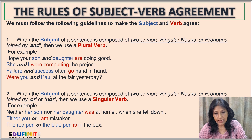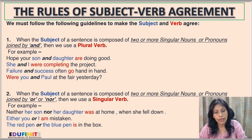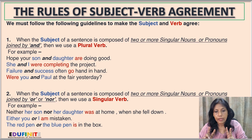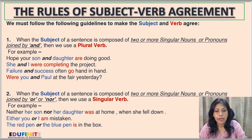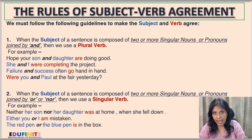Rule number two: when the subject of a sentence is composed of two or more singular nouns or pronouns joined by 'or' or 'nor', we use a singular verb. For example: 'Neither her son nor her daughter was at home when she fell down.' Also: 'Either you or I am mistaken.' And: 'The red pen or the blue pen is in the box' — since it's joined by 'or', we choose the singular verb 'is'.